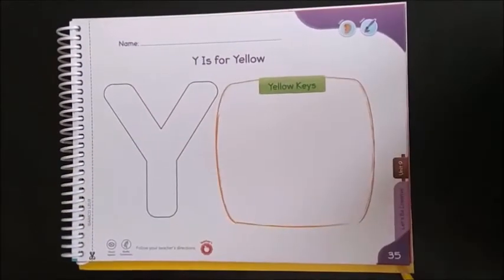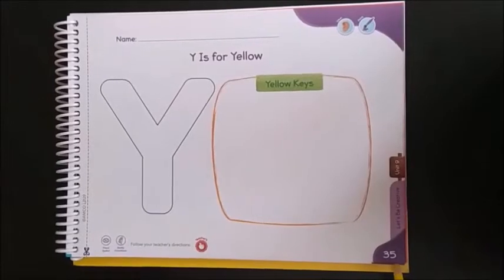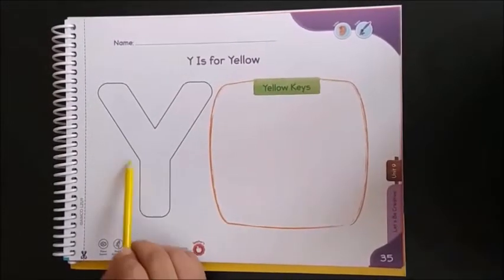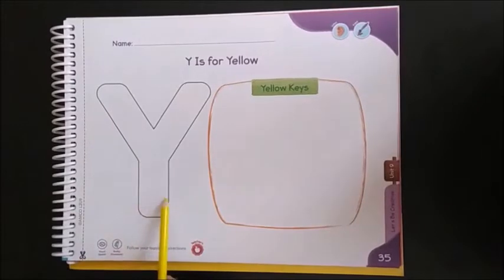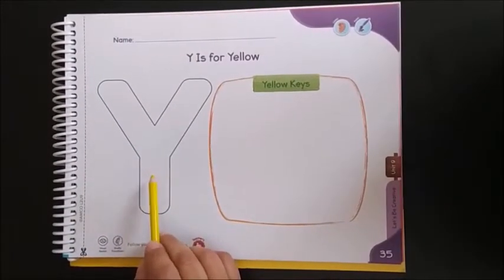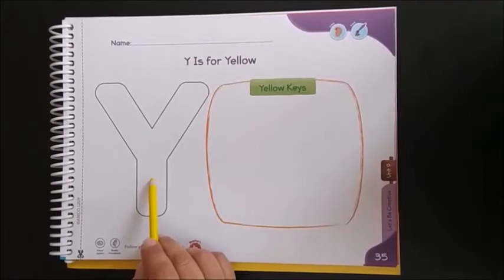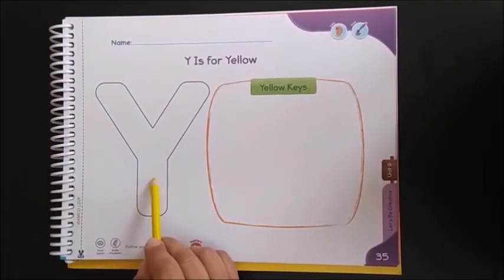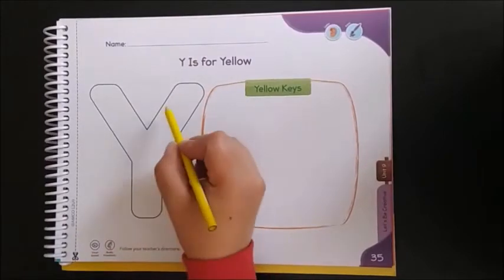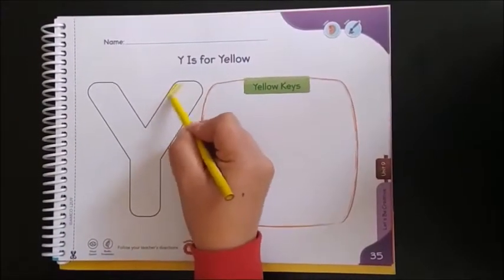Now in your Rocky Raccoon book, page 35, color purple — here we have the letter Y. This is the letter Y. Repeat: Letter Y. Y is for yellow. Please color the letter Y yellow.